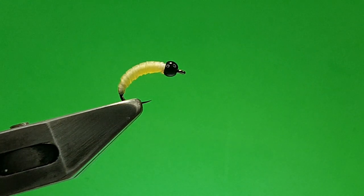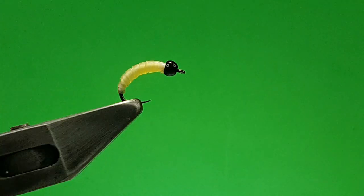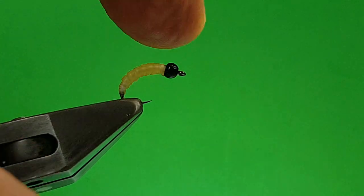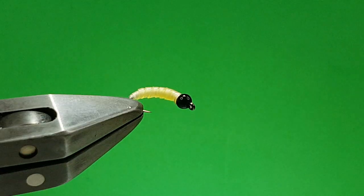And give it a real good tug, and cut it off. So that's your base done. Now you could do this in advance, prep them all up, and, but what I do is, I'm going to give it a coat of UV varnish.